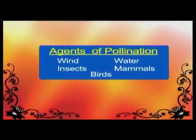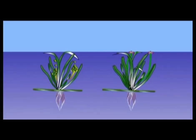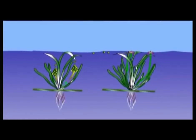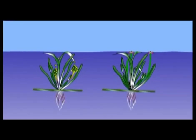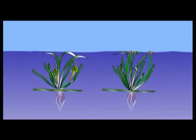Water: Pollination in aquatic plants is usually carried out by water. Water-pollinated flowers release their pollen grains into the water and are passively carried to other flowers by water currents. Example: seagrass.